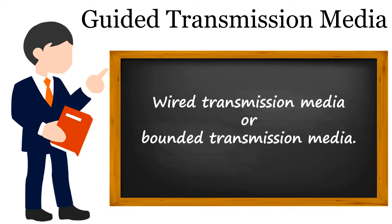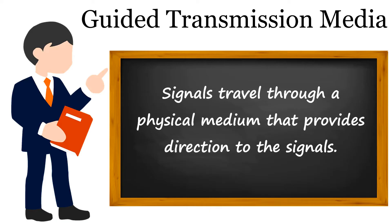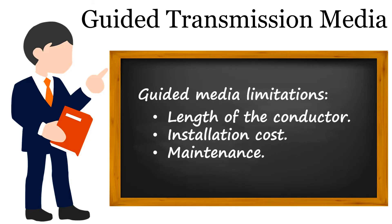The guided transmission media is also referred to as wired transmission media or bounded transmission media. Guided media provides a physical medium for signals to travel from source towards destination. As it uses a physical conductor for signals to travel, it provides a particular direction to these signals. However, physical conductors have certain limitations such as length — each conductor is produced up to a certain length and a single conductor may not connect sender and receiver at once. We may require a repeater to cover the area between sender and receiver.